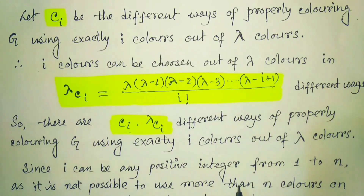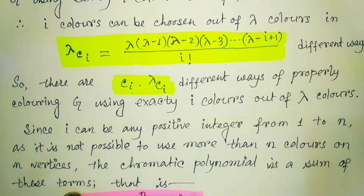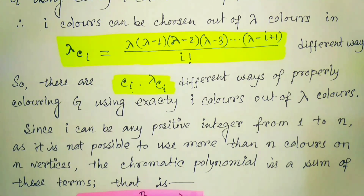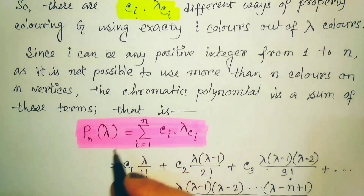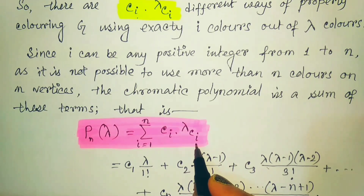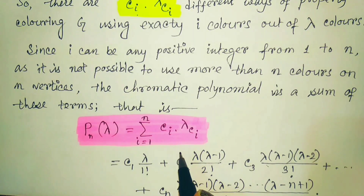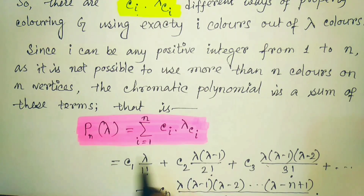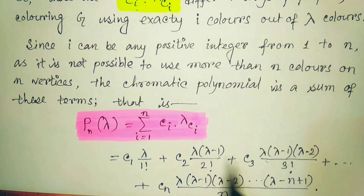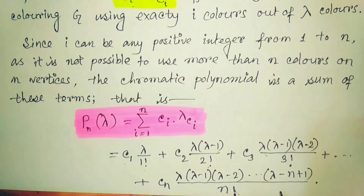Since i can be any positive integer from 1 to n — as it is not possible to use more than n colors on n vertices — the chromatic polynomial is a sum of these terms. That is, P(n, λ) = summation from i=1 to n of C_i × λC_i. If we expand this, we find C1·λ + C2·λ(λ−1)/2! + C3·λ(λ−1)(λ−2)/3! and so on. These are all binomial expansions.